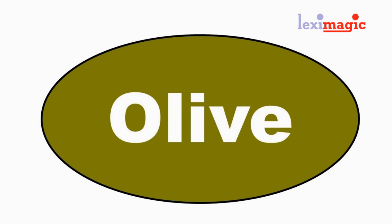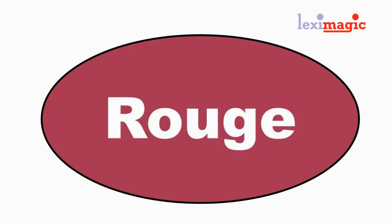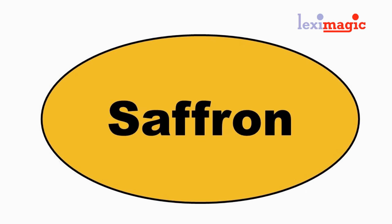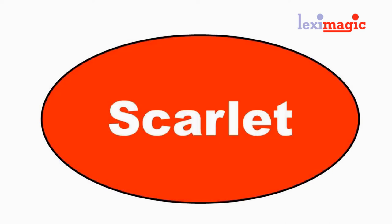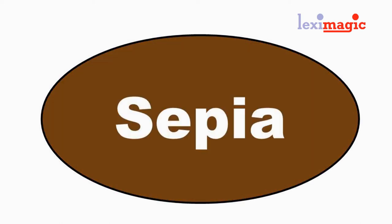Olive: a dark yellowish green. Rouge: a reddish pink. Saffron: an orangish yellow. Sapphire: a deep blue like the gemstone sapphire. Scarlet: a slightly orangish bright red color. Sepia: a dark slightly reddish brown.